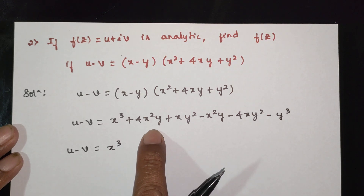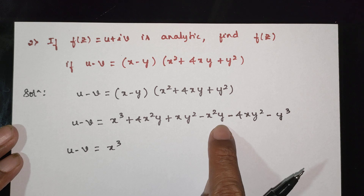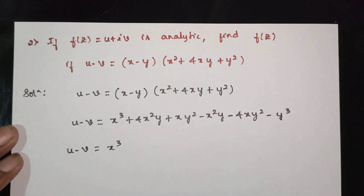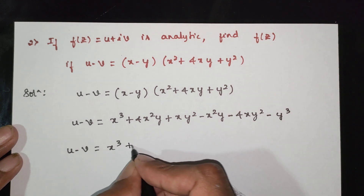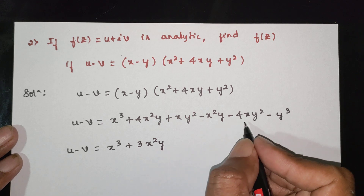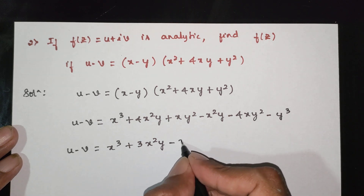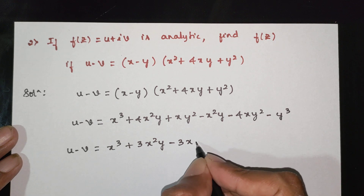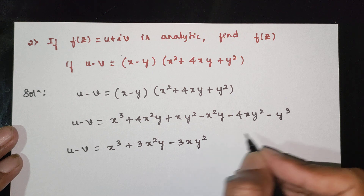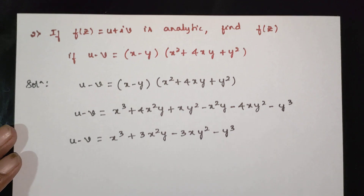Collecting like terms: minus x squared y minus x squared y gives minus 3x squared y... the xy squared terms: minus xy squared plus xy squared gives minus 3xy squared. So u minus v simplifies by grouping these terms.